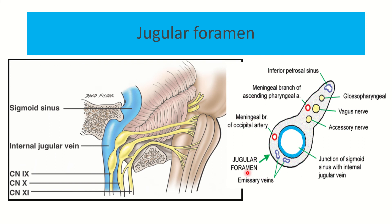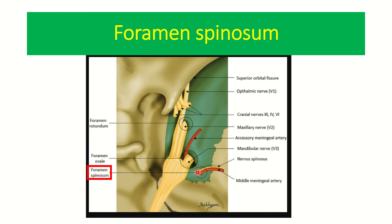In the third picture, we can see the foramen spinosum along with two other foramina. The foramen rotundum transmits the maxillary nerve, and behind it is the foramen ovale, through which the mandibular nerve passes. The superior orbital fissure transmits cranial nerves 3, 4, 5-one, and 6. The foramen spinosum is very important — through the foramen spinosum, the middle meningeal artery passes, along with the nervus spinosus. This is a very common and repetitive exam question.